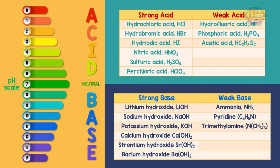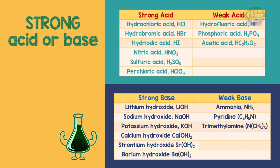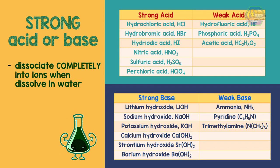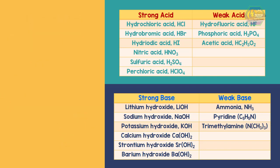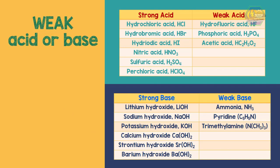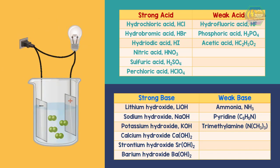The criterion for an acid or base to be considered strong is the ability to dissociate completely into ions when dissolved in water. When a strong acid or strong base dissolves in water, it produces strong electrolytes. When a weak acid or weak base dissolves in water, it produces weak electrolytes. Their dissociation into ions when dissolved in water can create current and even light a bulb.